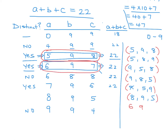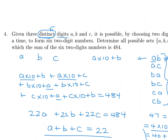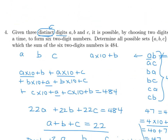Each unique set gives 6 permutations. For {5, 8, 9}: the arrangements are (5,8,9), (5,9,8), (8,5,9), (8,9,5), (9,5,8), (9,8,5). Similarly for {6, 7, 9}. So in total we have 6 plus 6 equals 12 different possible ordered sets.